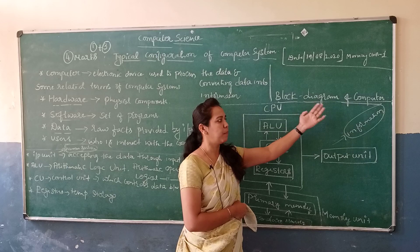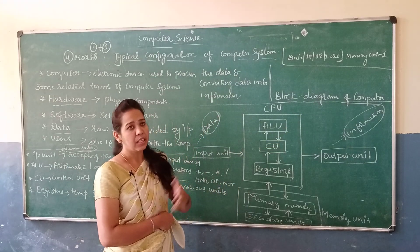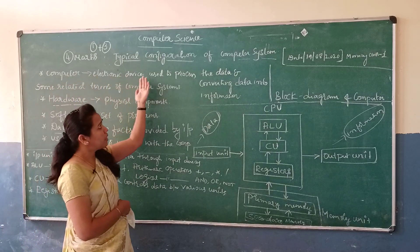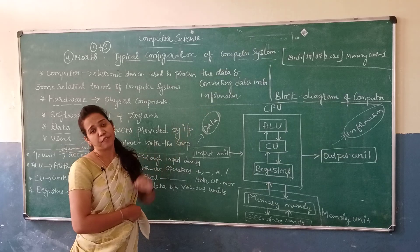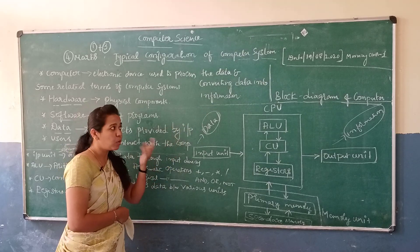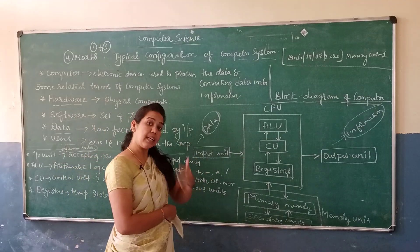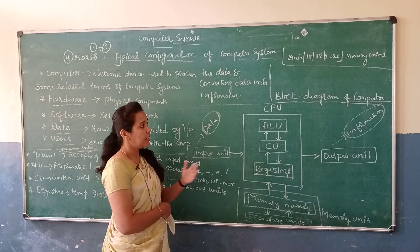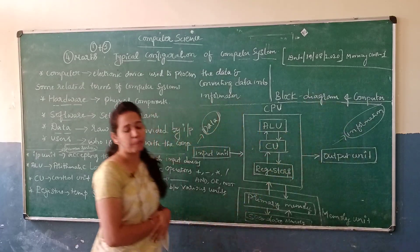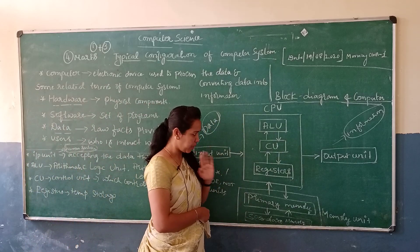Next is the block diagram of the computer — how it will work. I already told you: what is a computer? It is an electronic device used to process the data and converting the data into information. How does it process? How do we view the data? How do we get the output as information? That is the block diagram of the computer.